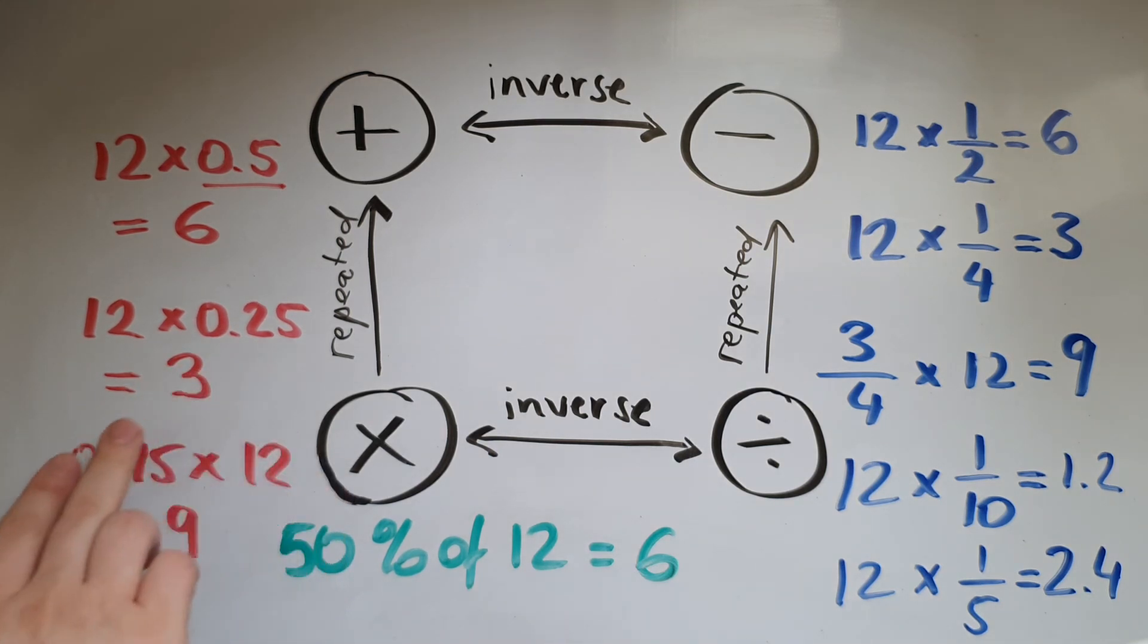25 percent of 12 is going to be 3. 75 percent of it is going to be 9. 10 percent is going to be 1.2. 20 percent is going to be 2.4.